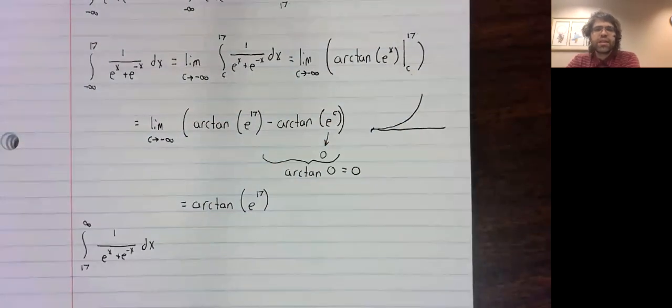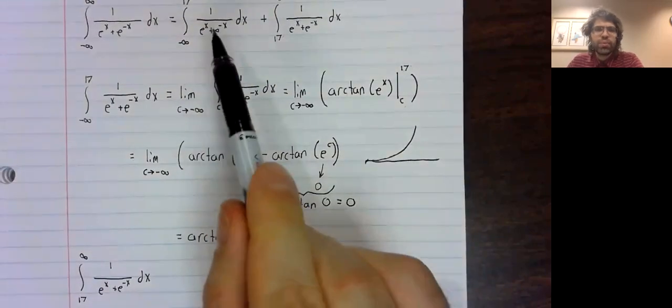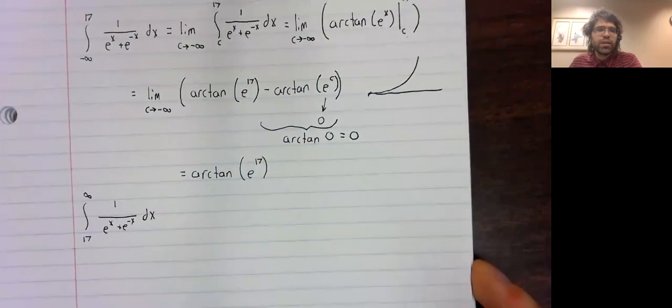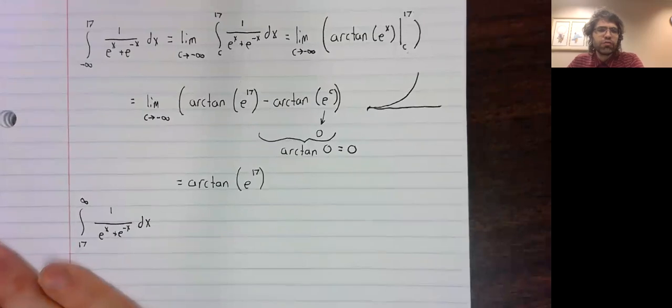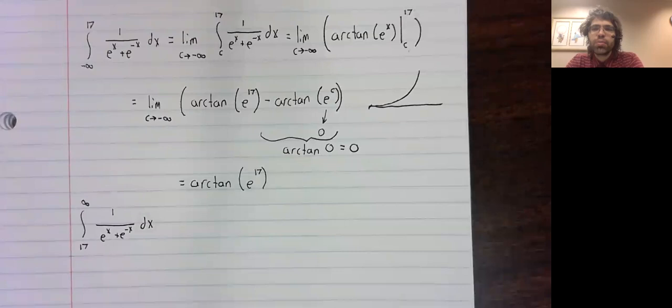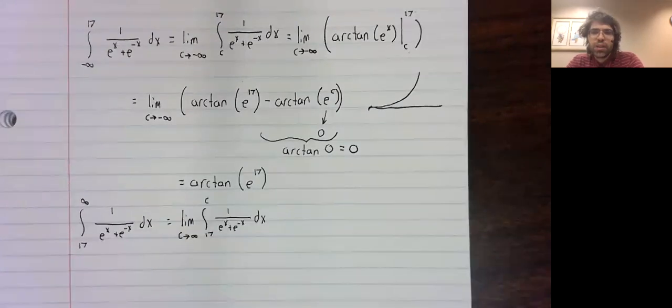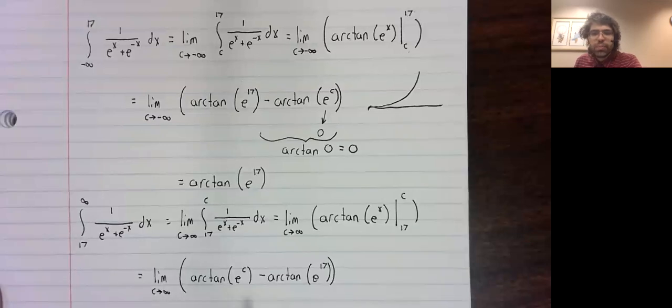The second improper integral that appears in this sum is found similarly. We rewrite it as a limit because that is how an improper integral is defined. And then we apply the fundamental theorem of calculus. And now we must compute the limit.